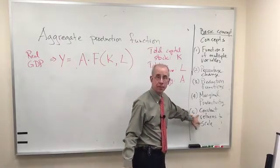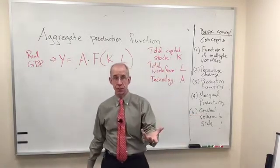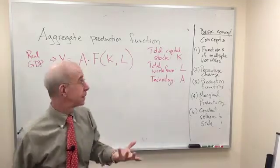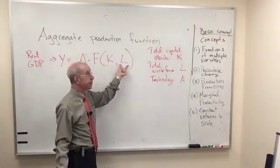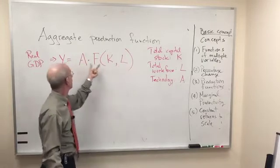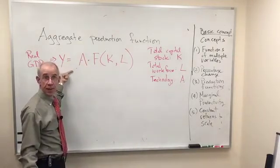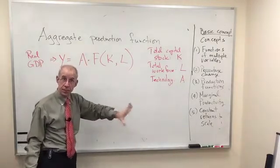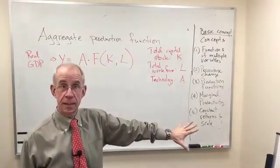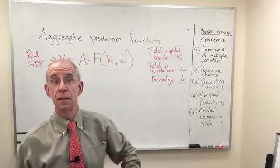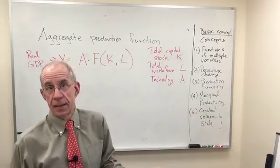We've got constant returns to scale by assumption, which means that if we double the amount of capital, and double the amount of labor simultaneously, we would get double the amount of output. So there's a separate video on constant returns to scale, so kind of set that aside. We're making a basic assumption about that.